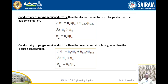Conductivity of N-type semiconductors: the electron concentration is far greater than the hole concentration. Therefore, σ equal to N_e × e × μ_e + N_H × e × μ_H. As N_e is greater than N_p, we can write σ_e equal to N_e × μ_e × e. These are all the expressions related to conductivity of N-type as well as P-type semiconductors.